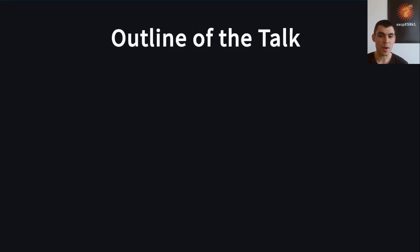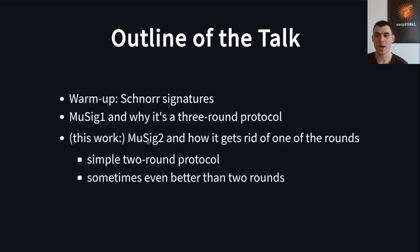We will now continue by warming up our memory of Schnorr signatures and examine MuSig1 and why it's a three-round protocol. Then we move our focus to MuSig2 and explain how to properly get rid of the communication round that had been added in MuSig1. We will obtain a simple two-round protocol, and explain why in some situations it is even more efficient than two rounds.